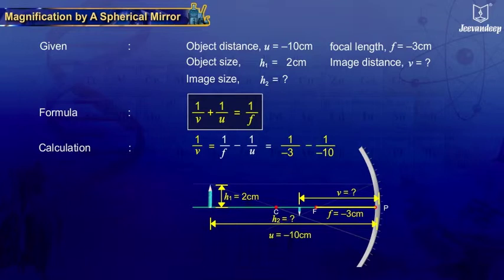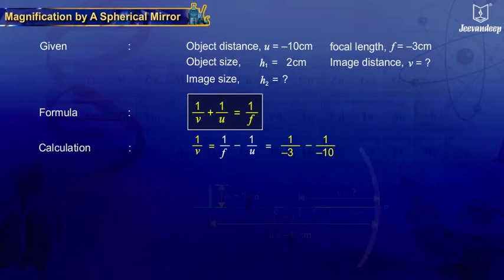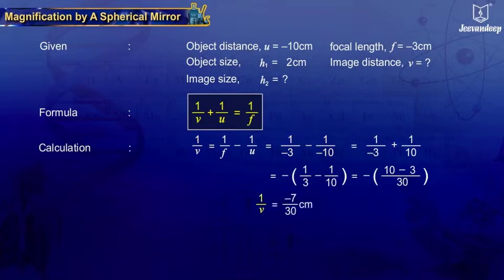Calculating this, we get 1 upon V is equal to minus 7 upon 30.